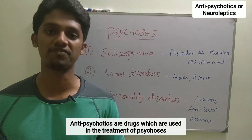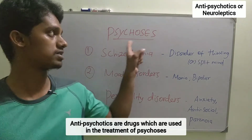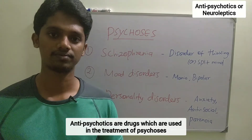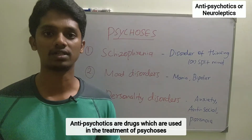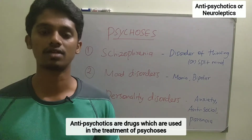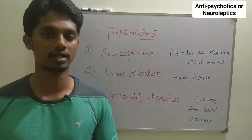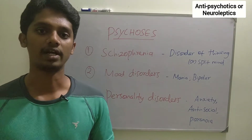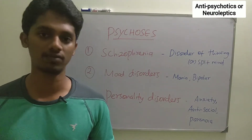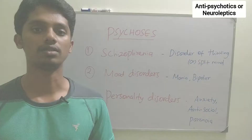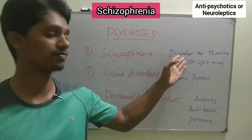Anti-psychotics are drugs which are used in the treatment of psychosis. Let's talk about what psychosis is and what type of disorders are there. The first disorder in psychosis is schizophrenia.